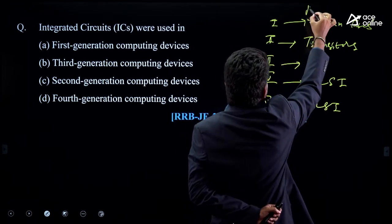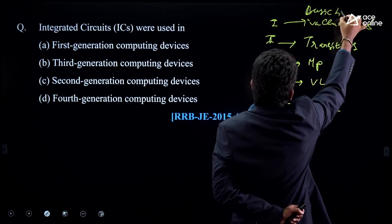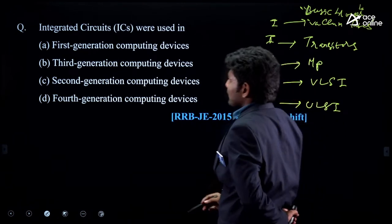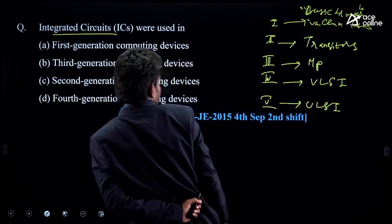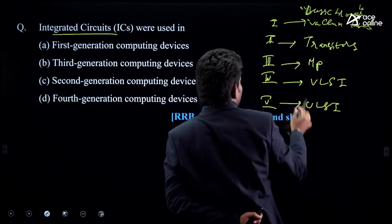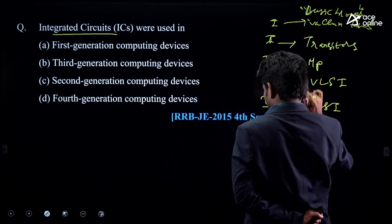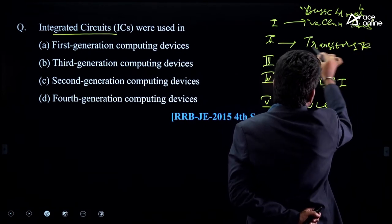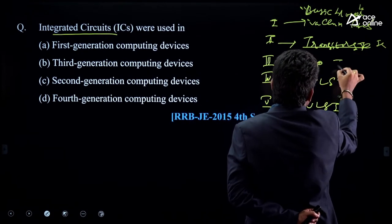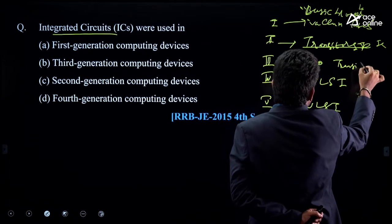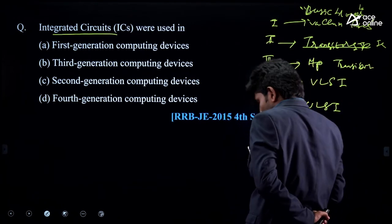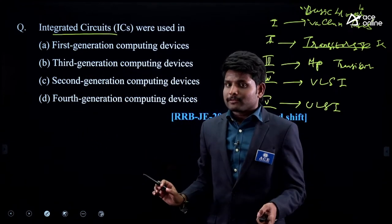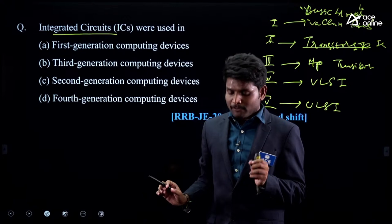These are the basic blocks of each generation. In this question, they asked where integrated circuits are used — the answer is third generation. Try to understand: in the different generations of computers, they have used different basic blocks. They asked about integrated circuits this year; next year they may ask about vacuum tubes.